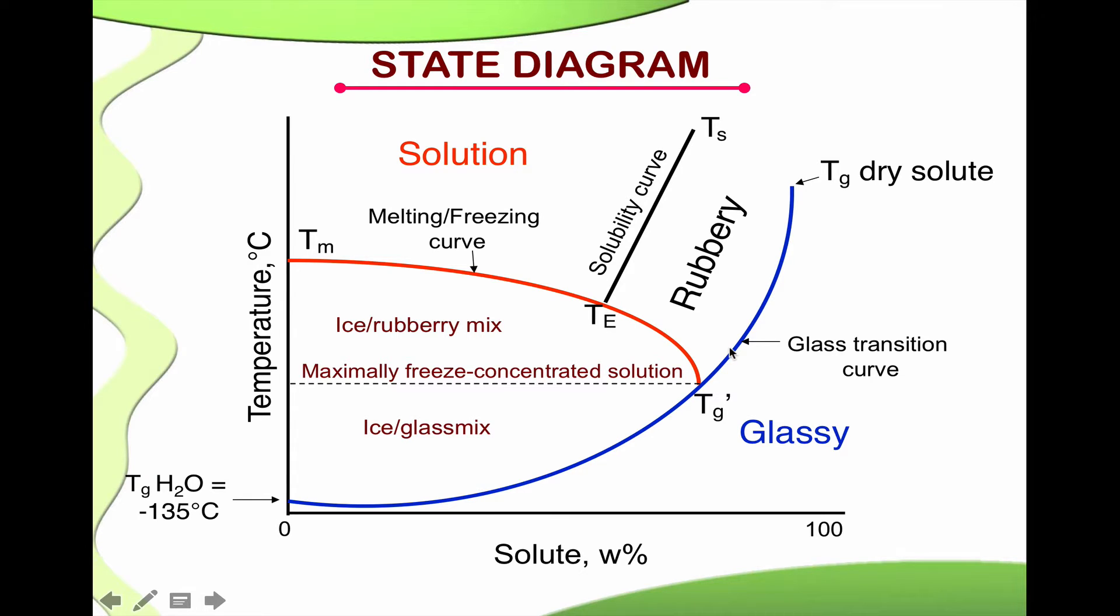So in this presentation, I will illustrate the application of state diagram by using one example that is the production of hard candy, and how the state diagram can be used to understand and to control the process of hard candy to get the product in the final form of sugar glass or amorphous state.